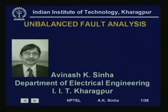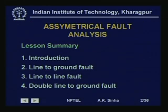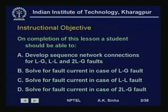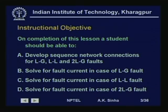We will discuss the analysis of unbalanced faults. We will first start with an introduction to unbalanced faults, then we will talk about how to solve for fault currents in case of line-to-ground fault, line-to-line fault, and double line-to-ground fault. On completion of this lesson, you should be able to develop the sequence network connections for line-to-ground, line-to-line, and double line-to-ground faults, and solve for fault currents in each case.